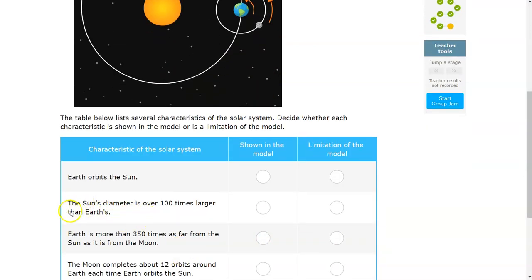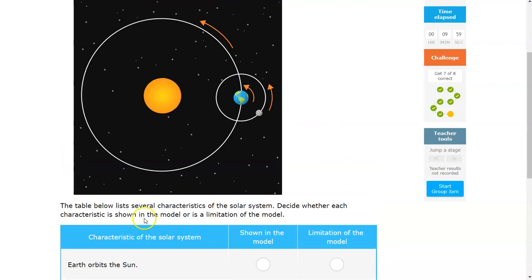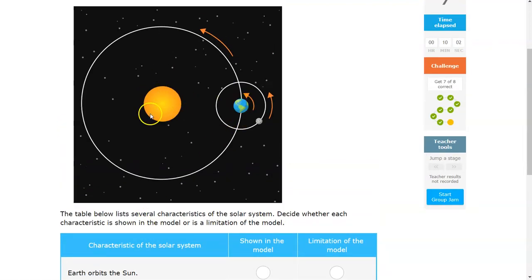Does it show that the Sun's diameter is bigger than the Earth's? So look at this picture of the Earth, look at the picture of the model. Does the Sun look 100 times bigger than the Earth?